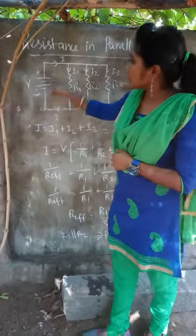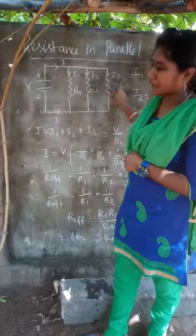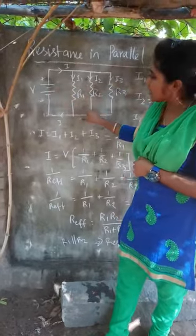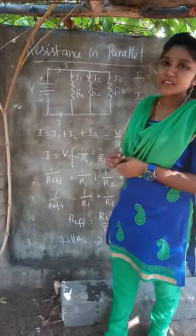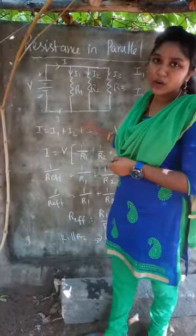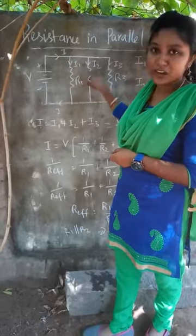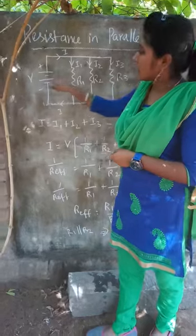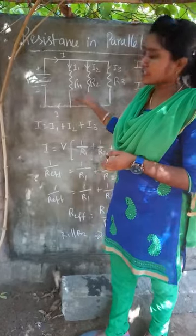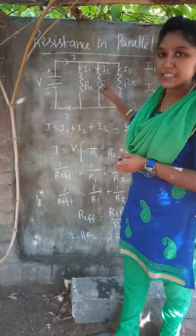In parallel connection, the current through each resistance will be different. The voltage across each resistance will be the same. In the previous case — series connection — current is the same through all resistances, but voltage is different across each resistance. In parallel connection, current is different across each branch, but voltage is the same.